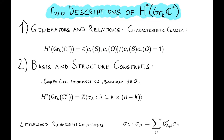The other description, more close to the topic of the seminar, is in terms of a basis and structure constants. We have a complex cell decomposition of the Grassmannian, which means we only have even-dimensional cells, and therefore the boundary map is tautologically zero. The integer coefficient cohomology of the Grassmannian is generated by the fundamental classes of the Schubert varieties, parameterized by those that fit into a k times n minus k rectangle. The structure constants are given by Littlewood-Richardson coefficients, and there are many combinatorial ways to compute these.